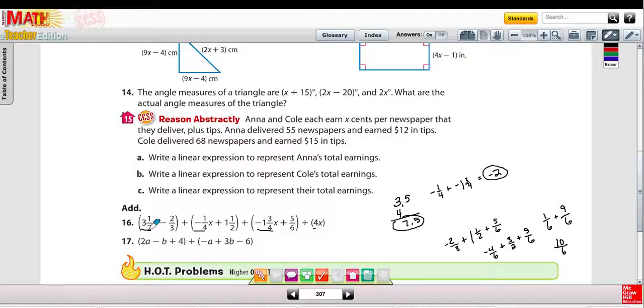You could change those to decimals, you could change them to improper fractions, however you want to do that. I did mine off to the side, changing the 3½ and the 4 to decimals, getting a total of 7.5.